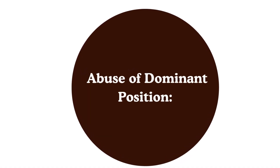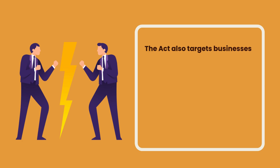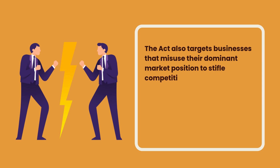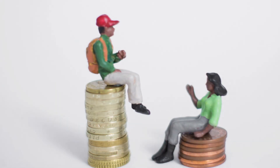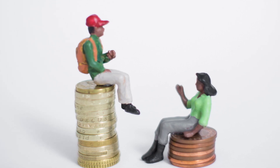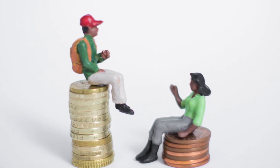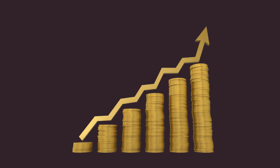Number two, abuse of dominant position. The Act also targets businesses that misuse their dominant market position to stifle competition. A company is considered dominant when it has enough market power to operate independently of competitive forces. Examples of abuse of dominance include predatory pricing — where a dominant player sells products at such low prices that competitors are driven out of the market — limiting production to raise prices, or imposing unfair terms on consumers or suppliers.